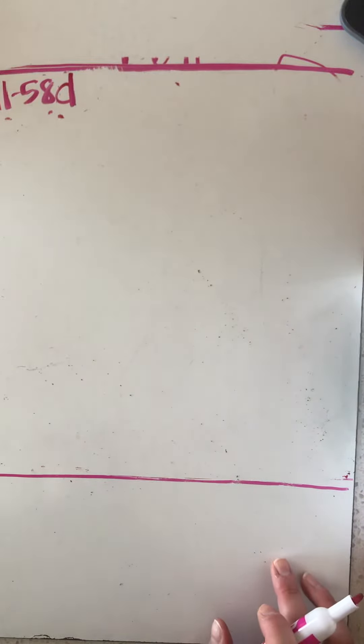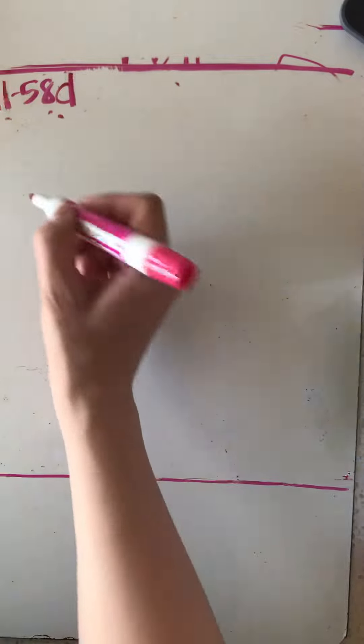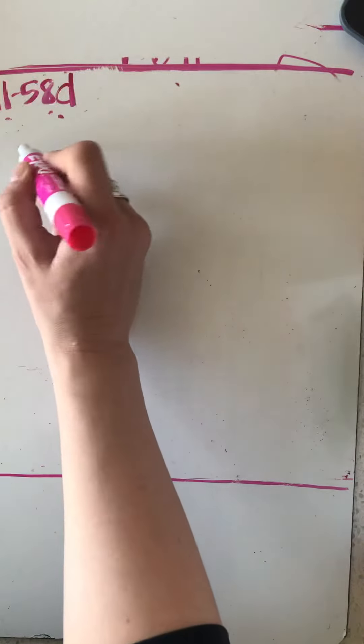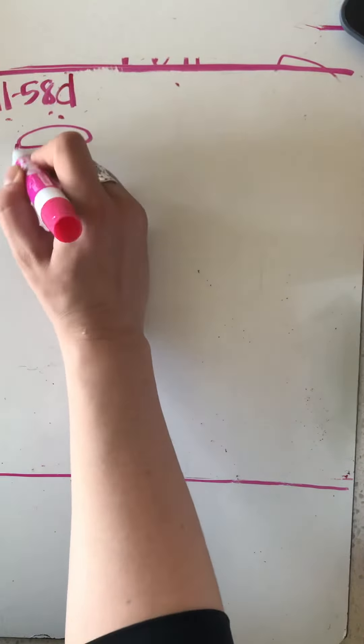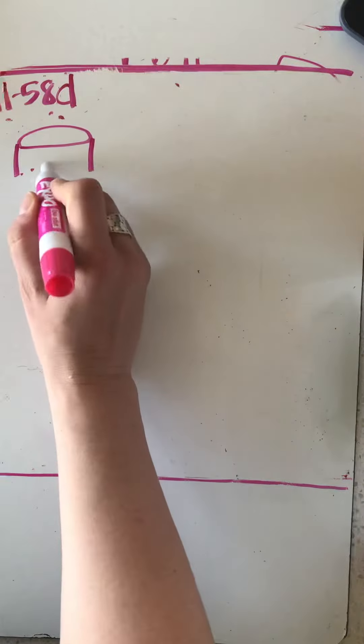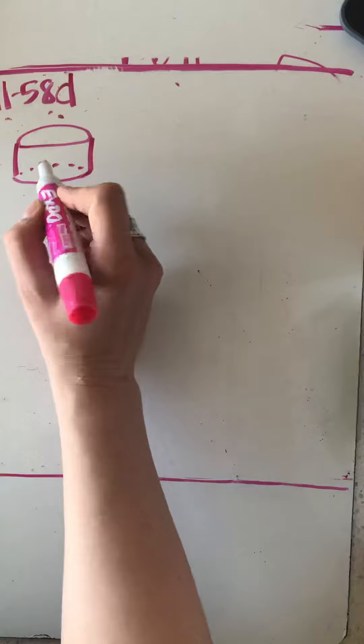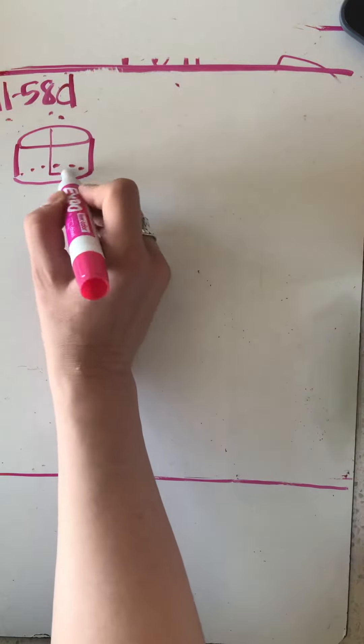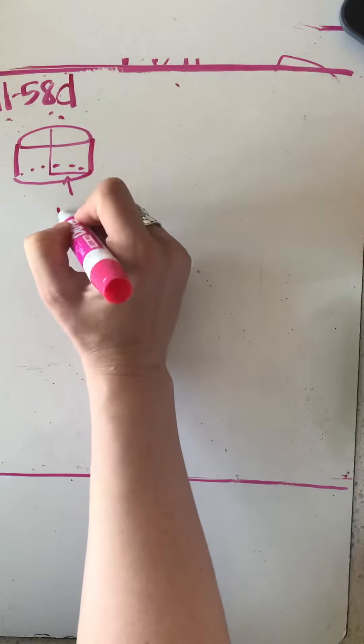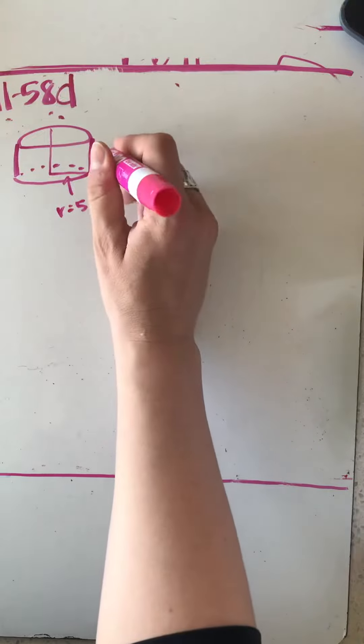This is a video for 1158d, finding the volume and surface area of a cylinder. I've got my base as a circle and they told me in the diagram that my radius is 5 and my height is 2 meters.